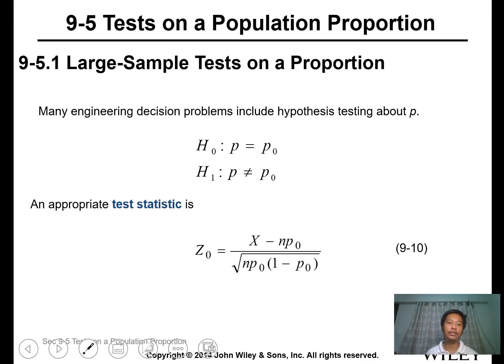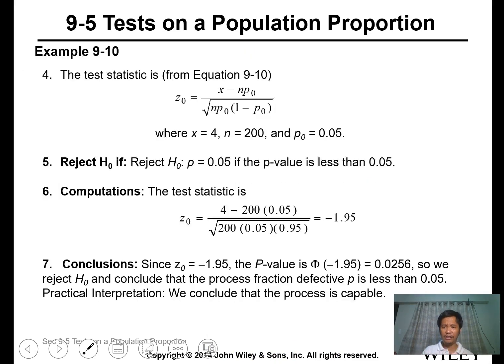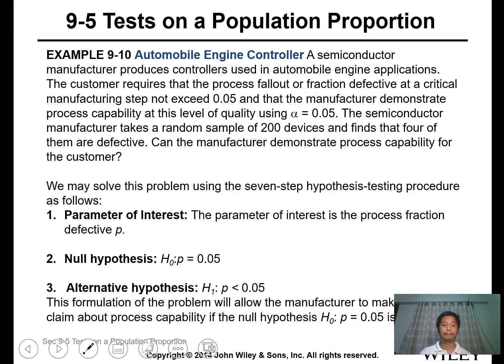Now, for large sample tests on a proportion, you use these hypotheses and alternative hypotheses. The test is the z-test, but this is the formula for proportion. There's another formula for the z-value. You can use this one for testing your z-value for proportions.